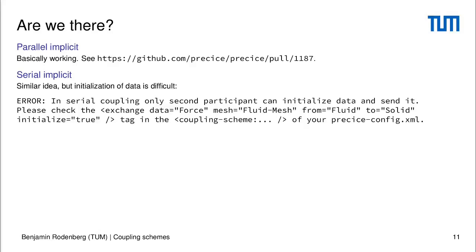This brings me to the conclusion of my talk. Is time interpolation available in PreSize? For parallel implicit coupling, it's basically working in the read direction. If you want, you can check out my pull request and then you can basically do what I just showed you in the previous examples.